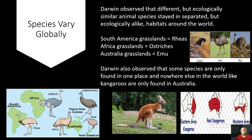One of Darwin's first observations is that species vary globally. He observed that different but ecologically similar animal species stayed in separated but ecologically alike habitats around the world. For example, the South American grasslands is where the rhea resides, the African grasslands is where the ostriches reside, and in the Australian grasslands this is where the emu resides. Notice that these are different species, but they stay in separated and ecologically alike habitats around the world, and if you look at these species, they look awfully similar to one another.